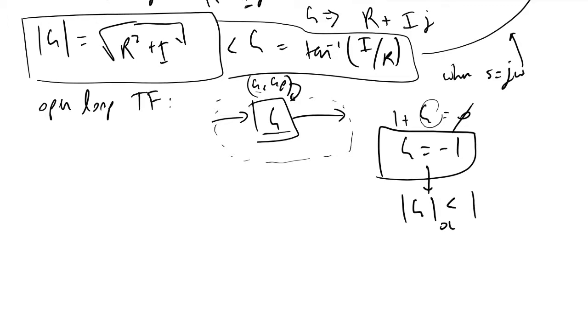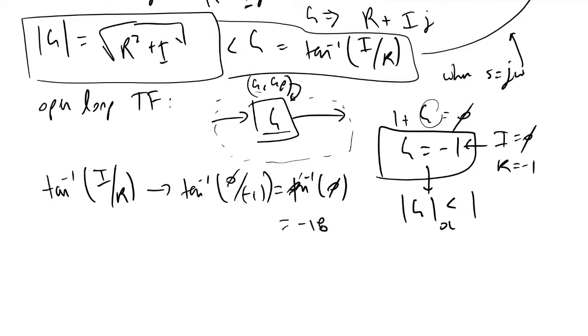In addition to that, if we analyze the inverse tangent of I over R, in this case I equals 0 and R equals minus 1. So we would have tan inverse of 0 over minus 1, which equals tan inverse of 0, which equals minus 180 degrees.